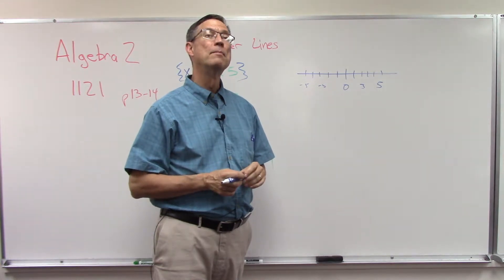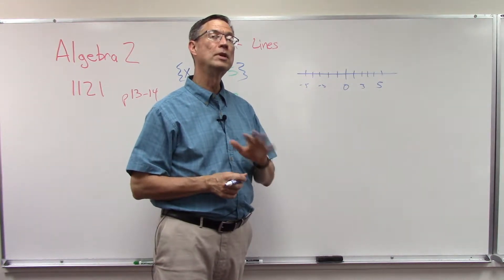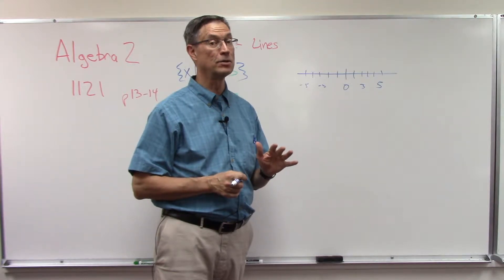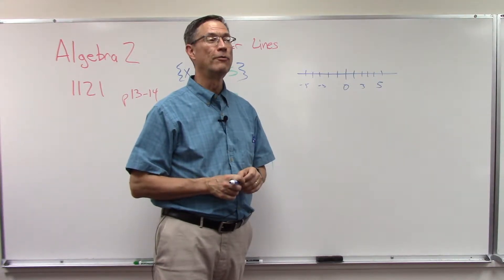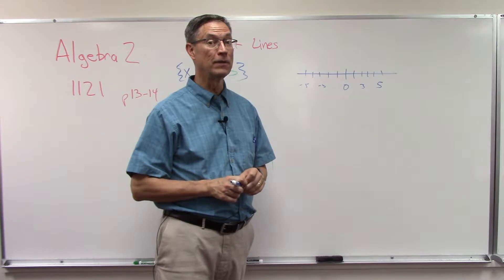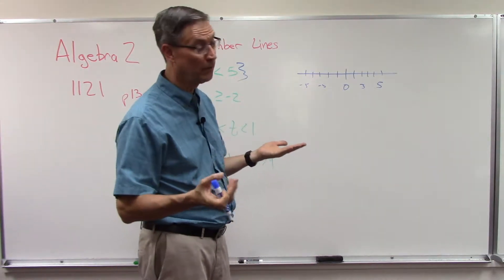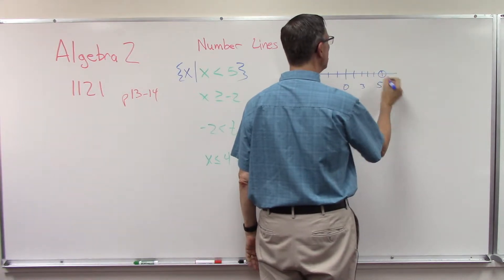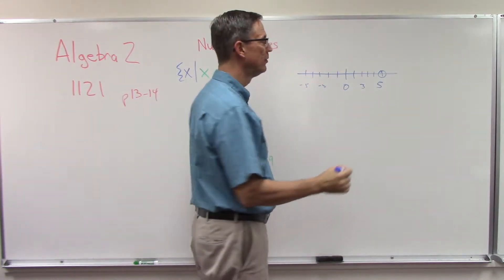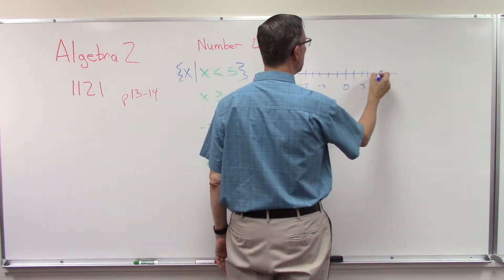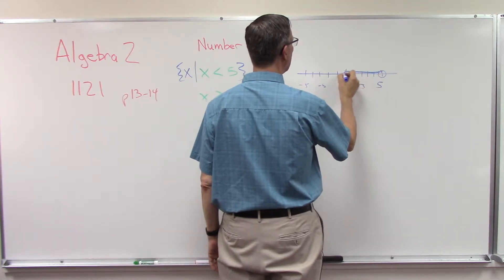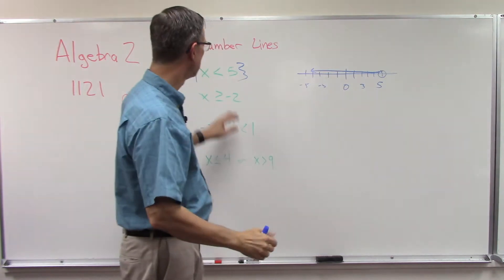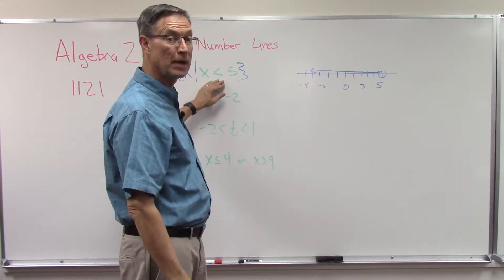Like 4.9 is actually less than 5. 4.999 is less than 5, but 5 is not less than 5. So when we graph this, we have to put an open circle over the 5, and then we would draw a line, a solid line over top, showing that everything this direction satisfies this condition of x being less than 5.